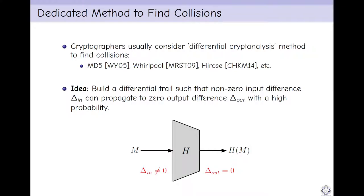The dedicated method to find collisions generally considers differential cryptanalysis to find collisions, for example, MD5, Whirlpool, Hirose, etc.